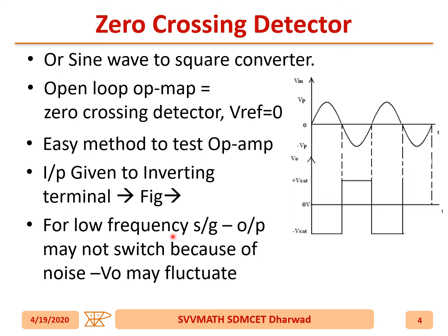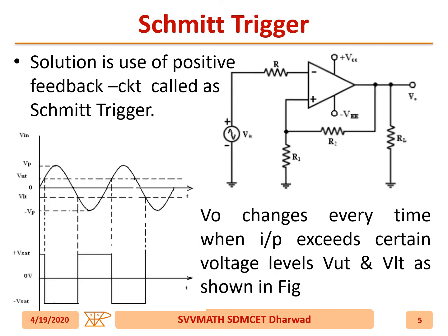For a low frequency signal, the output may not switch because of noise — V_out may fluctuate. The solution is to use positive feedback, which is called a Schmitt trigger.